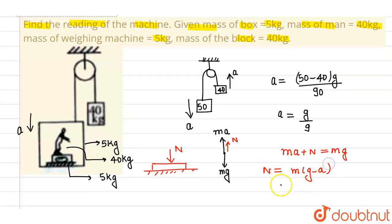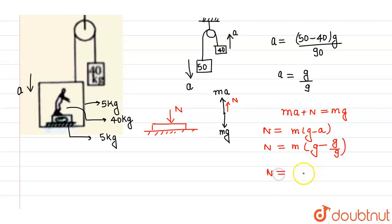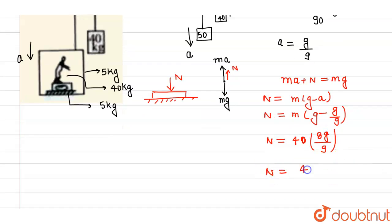Here, g = 10 m/s² and acceleration a = g/9. So N = 40 × (g − g/9) = 40 × (8g/9). Substituting g = 10, this becomes 40 × 80/9, which equals 3200/9 ≈ 355.55 Newtons.